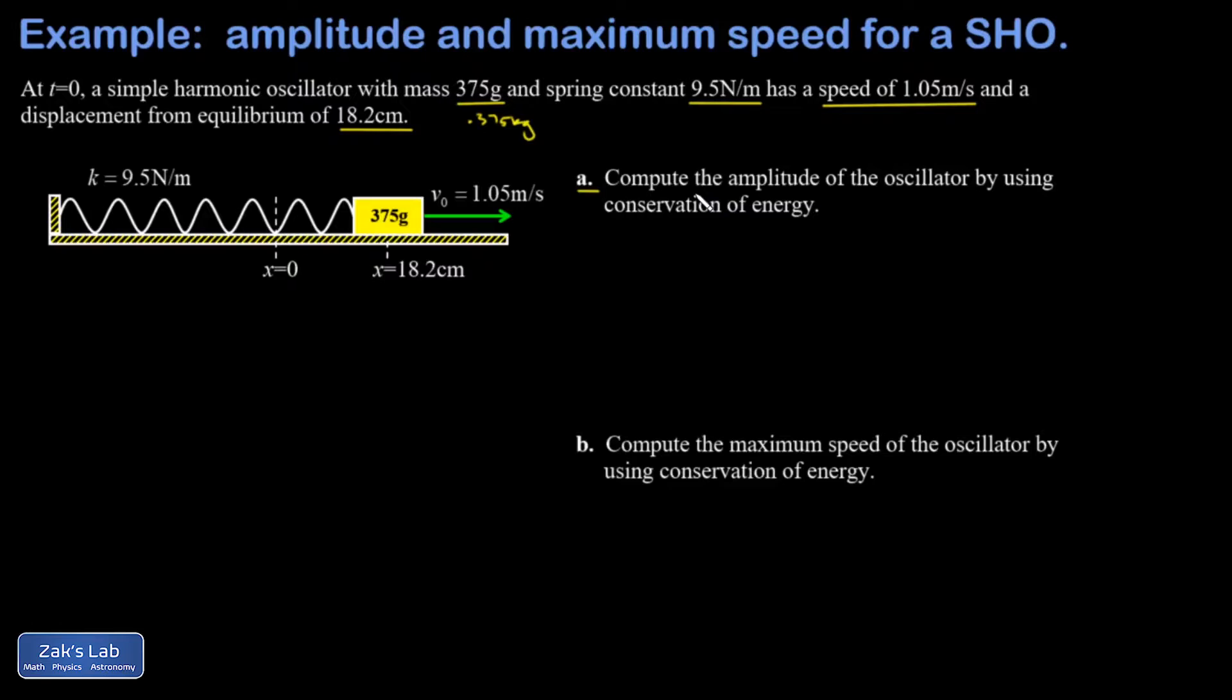The idea here is we can look at this snapshot, and at this moment in time we have some spring potential energy and we have some kinetic energy. If I add all those up I'll get the total energy in this oscillator. The spring potential energy part is one half kx squared, and the kinetic energy part is one half mv squared.